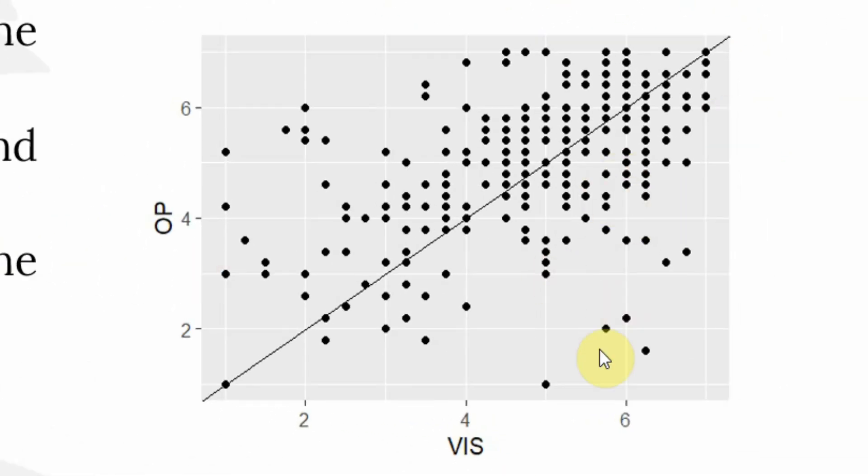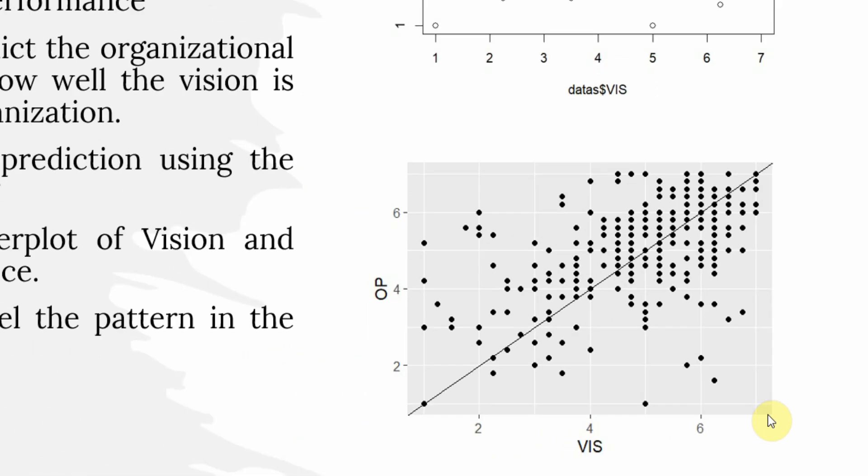If you look here, as you increase the score of vision, the score for organizational performance tends to increase. These are high organizational performance points and at the same time you've got high vision score here as well.